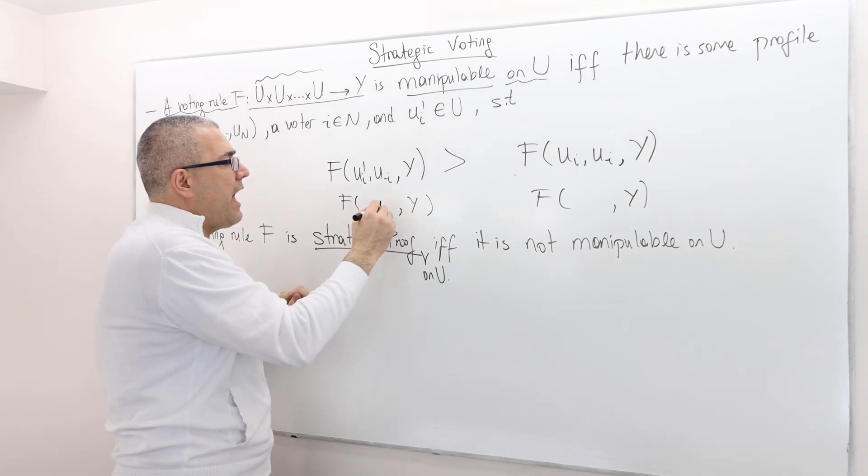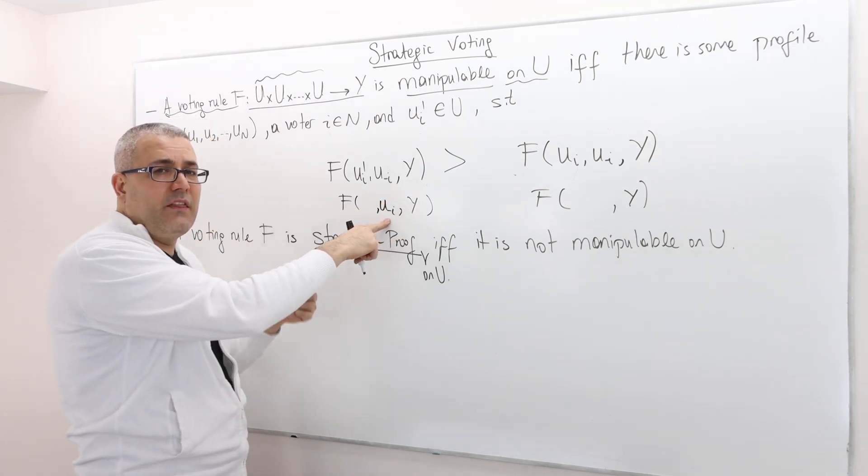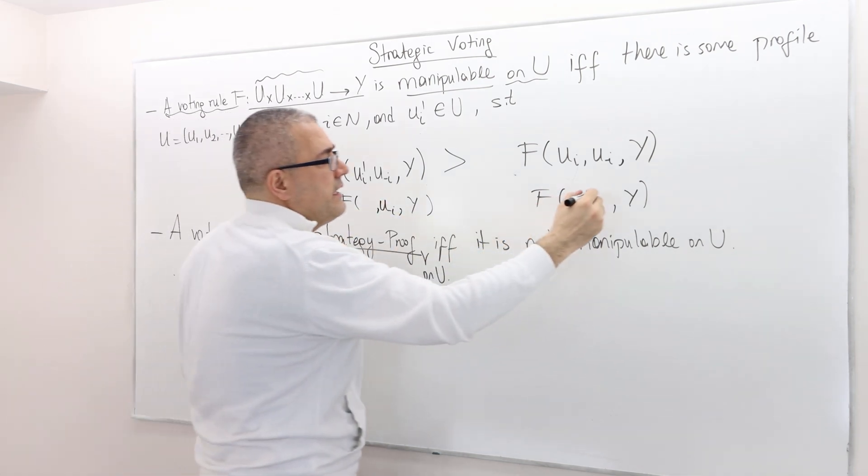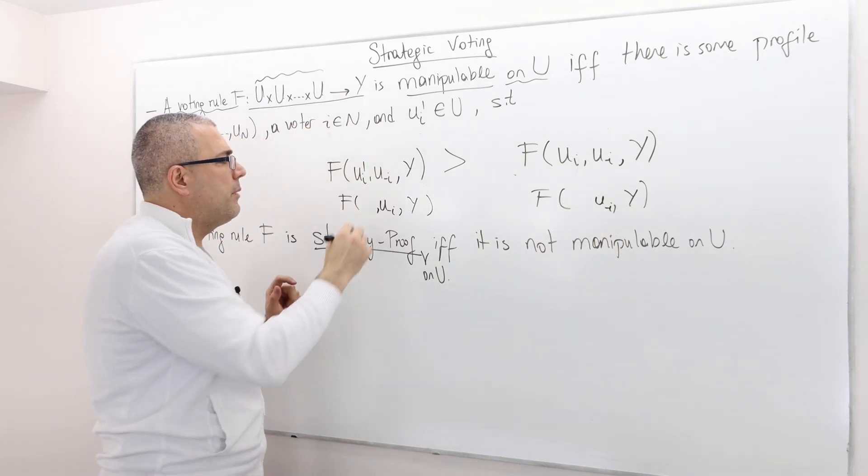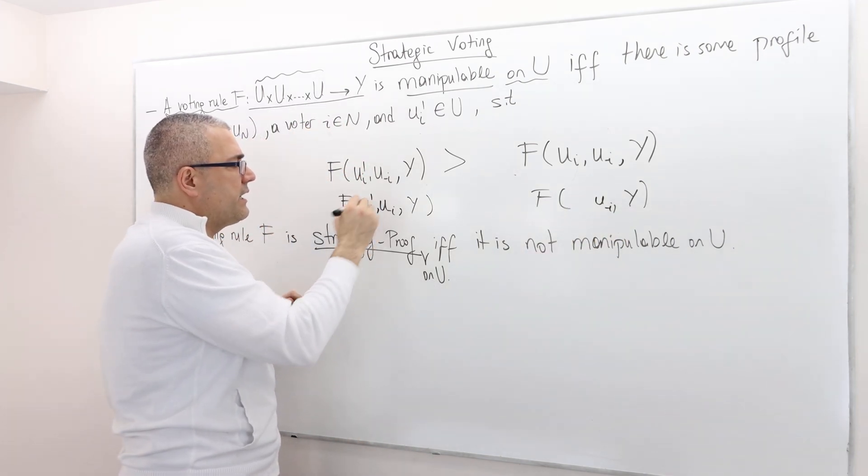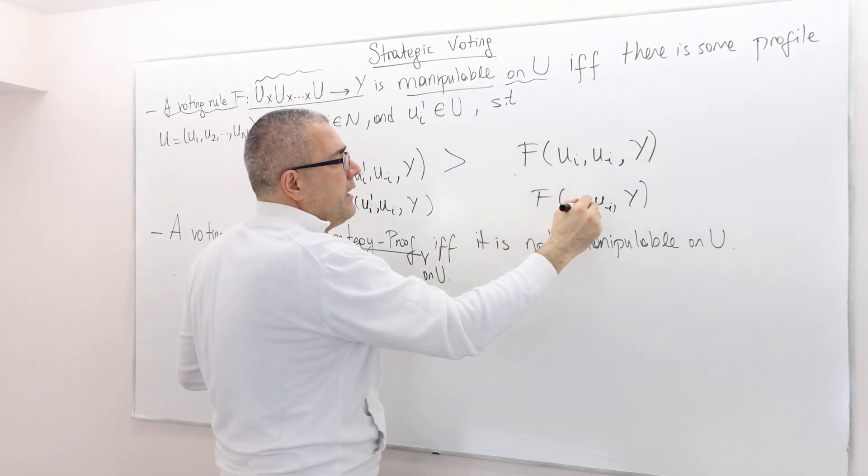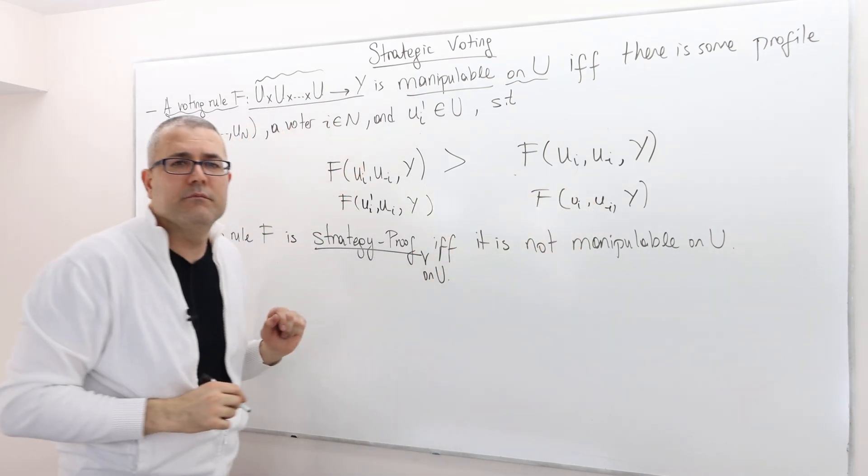Why? The only difference is the preference profile declared by the players. How? Well, every player other than player I declares exactly the same thing. But player I here declares U I prime and here declares U I.